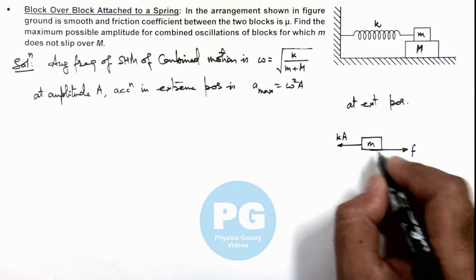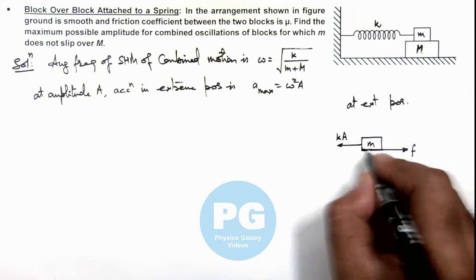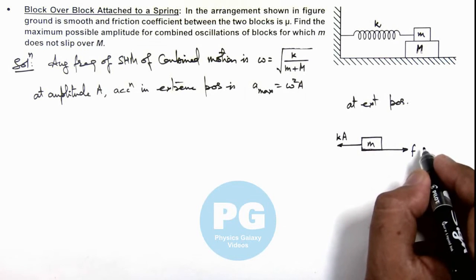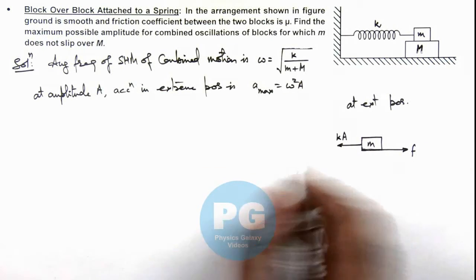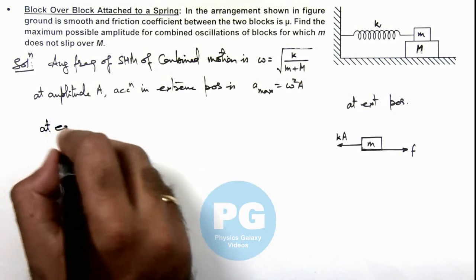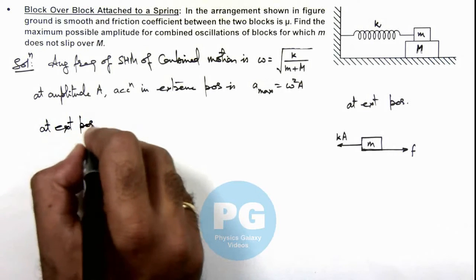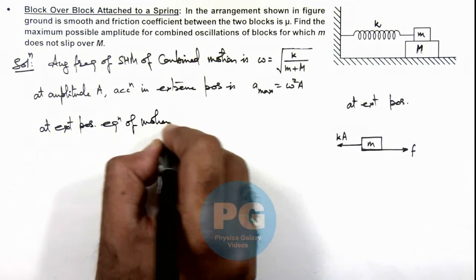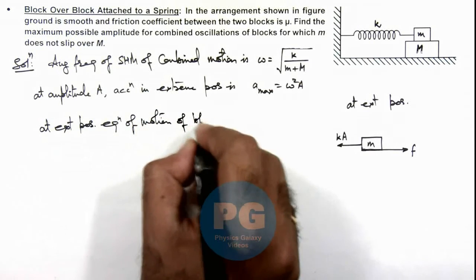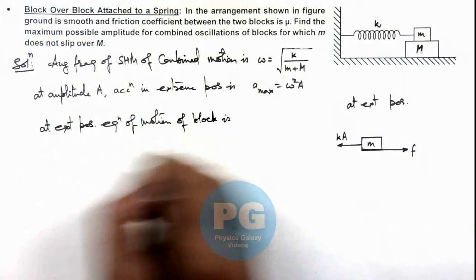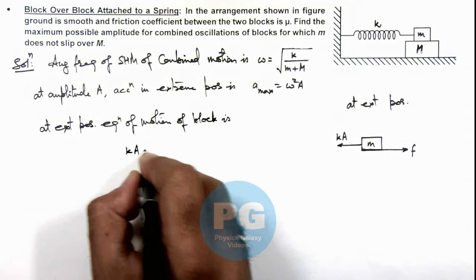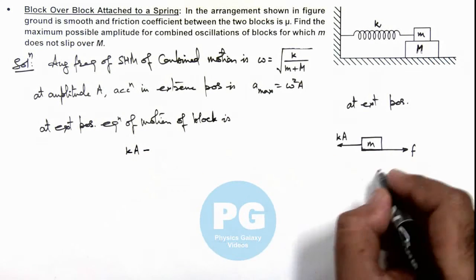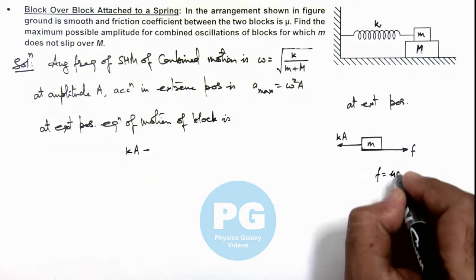The block will start slipping when the friction approaches its limiting value. At extreme position, equation of motion of block is k times A minus friction, and its limiting value can be written as mu times m times g, so minus mu m g equals m times a where a is the acceleration.